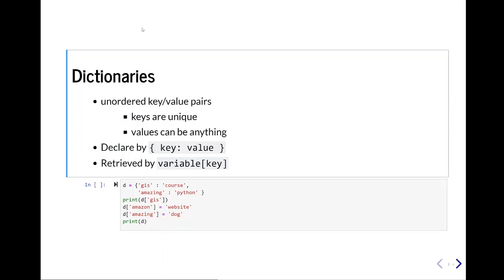Dictionaries look kind of like sets, except that it's a set of unordered key-value pairs. And the keys have to be unique, but the values can be anything. They're declared by using that squiggly bracket like we did for set, but in this case, we're doing some key value, colon, some value. And then we close it by another squiggly bracket.